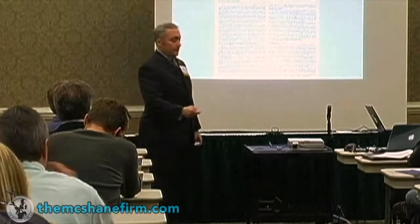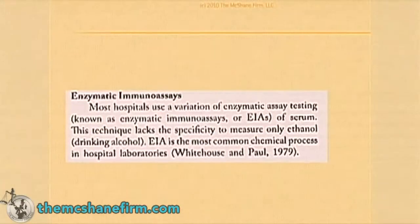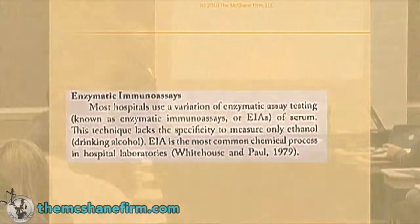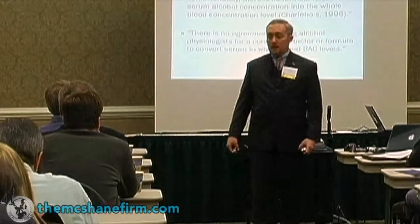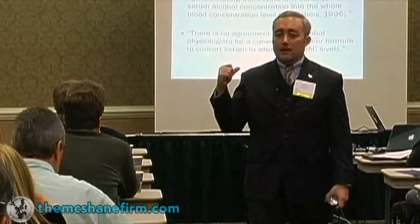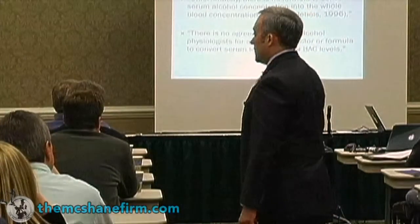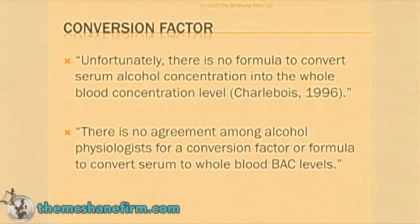The end result — you get quotes like this: 'Most hospitals use a variation of enzymatic assay testing known as enzymatic immunoassays or EIAs of serum. This technique lacks the specificity to measure only ethanol. EIA is the most common chemical process in hospital laboratories.' It's not specific, and unfortunately there is no way to meaningfully convert from a plasma blood result to a whole blood result in order for someone to come into court and say, as an expression of his whole blood, he was a 0.08 based upon the hospital blood method. There's no agreement among academics — they all agree that a plasma or serum test always overstates how much alcohol is in the system, but they don't agree on how much.